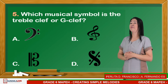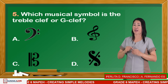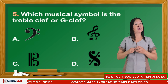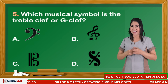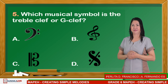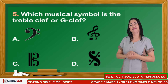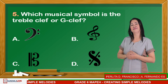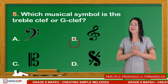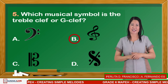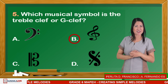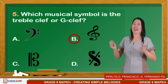Number five: Which musical symbol is the treble clef or G-clef? Is it A, B, C, or D? The correct answer is letter B. How many of you got five correct answers? Very good!